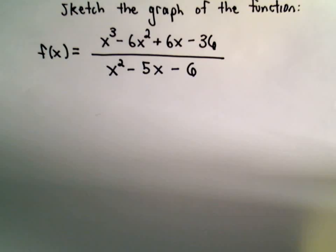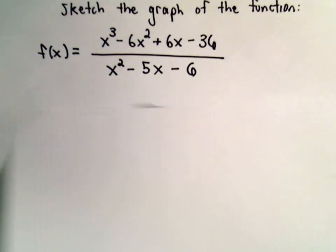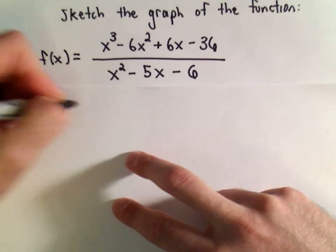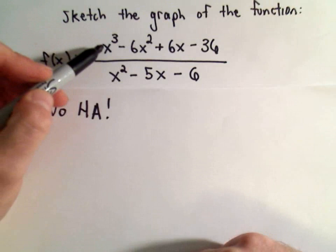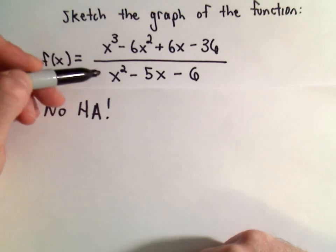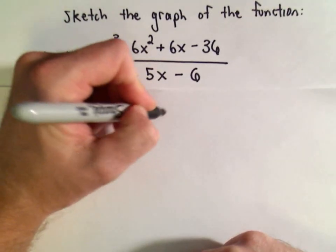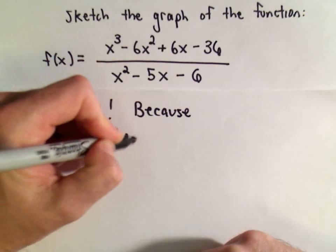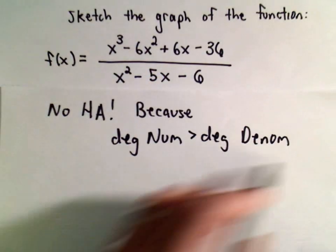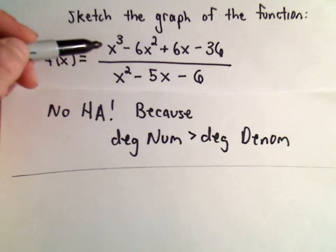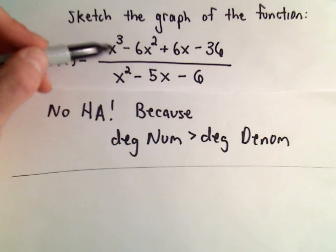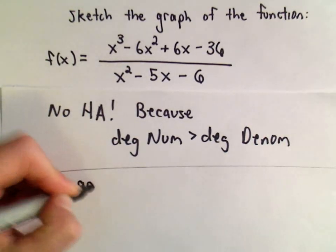Now let's think about horizontal and oblique asymptotes. There's no horizontal asymptote in this case because the degree of the numerator is larger than the degree of the denominator. The degree of the numerator is 3 and the degree of the denominator is 2. Since the degree of the numerator is exactly one larger, there is going to be an oblique asymptote.